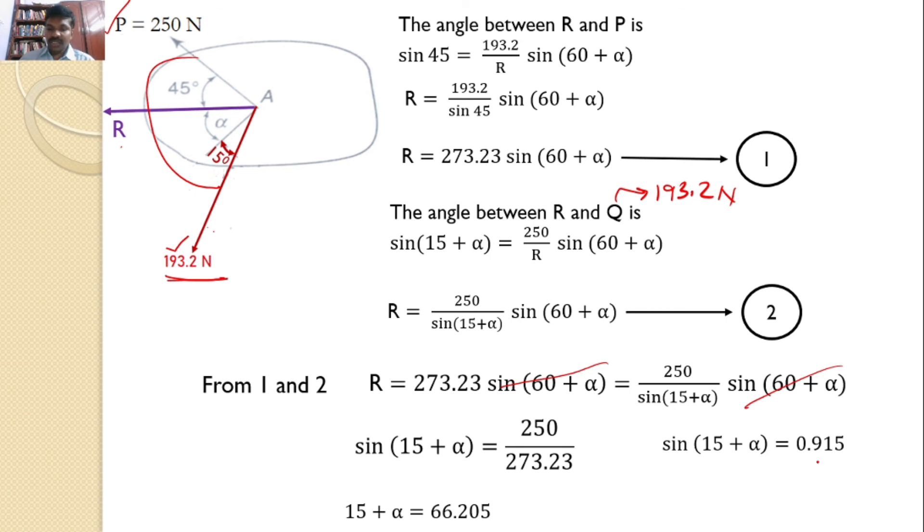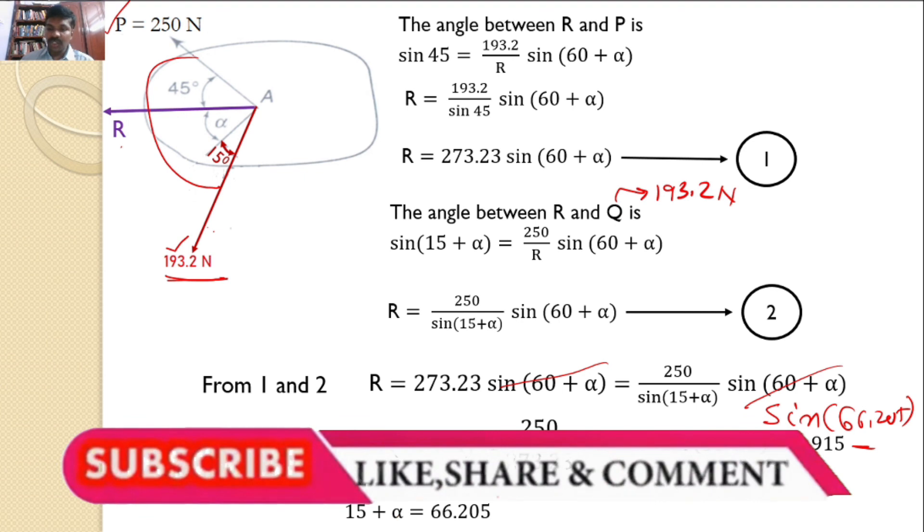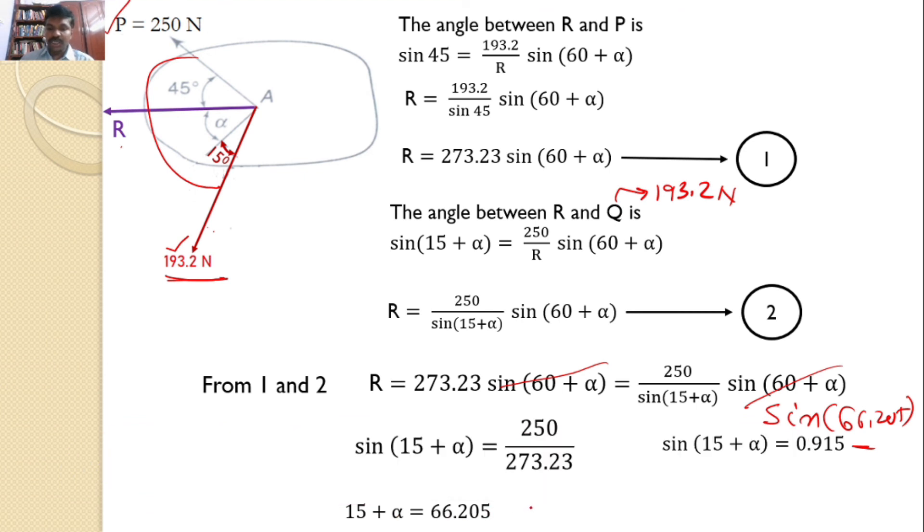That means 0.915 means sin of 66.205 is 0.915. So, after simplification I will get 15 plus alpha equals 66.205 or alpha equals 51.205 is the final answer.